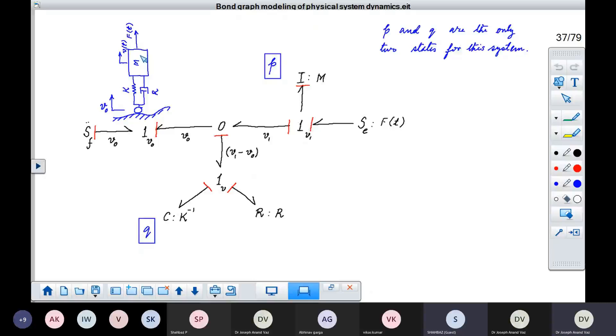On the other side, things are exactly the same as we discussed earlier. We have a one junction representing motion of this mass. And we assign the force, SE. Also, the momentum, also this mass is modeled using this I element. It is placed on a one junction here. It is a common flow junction.